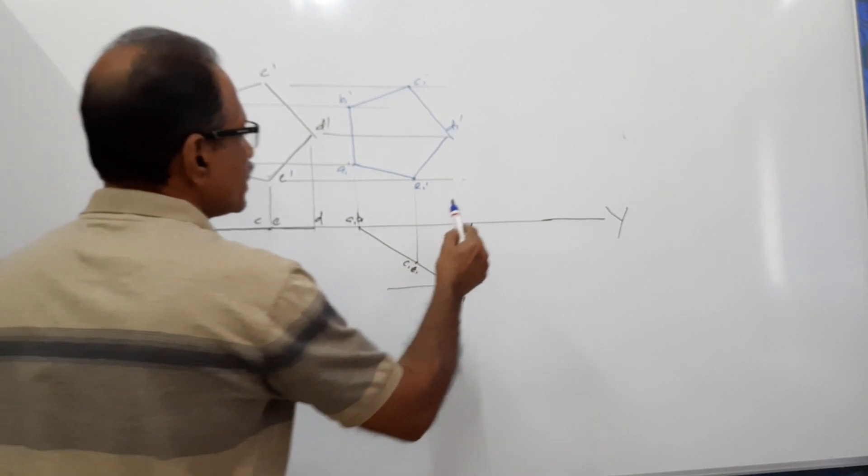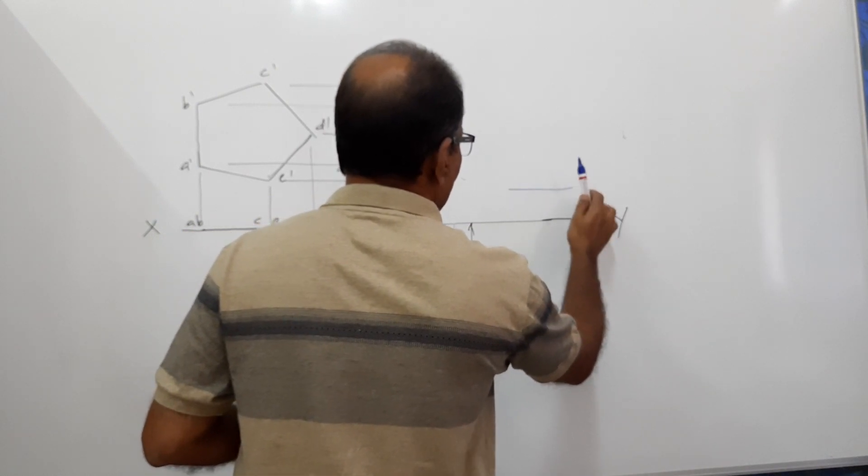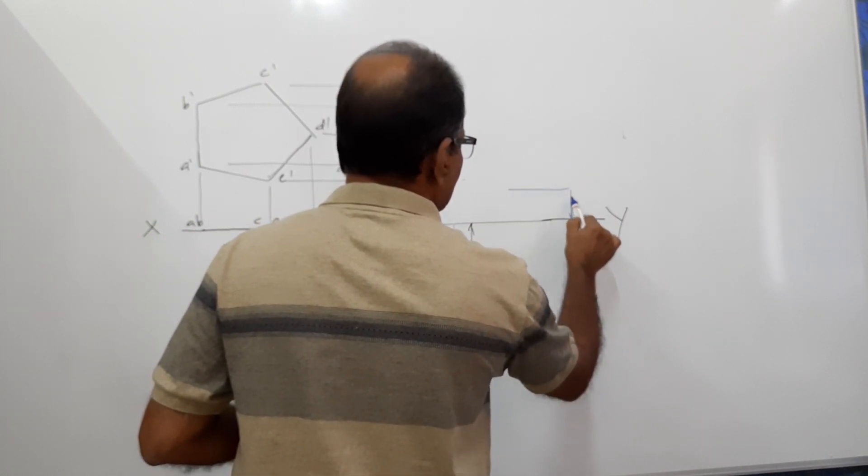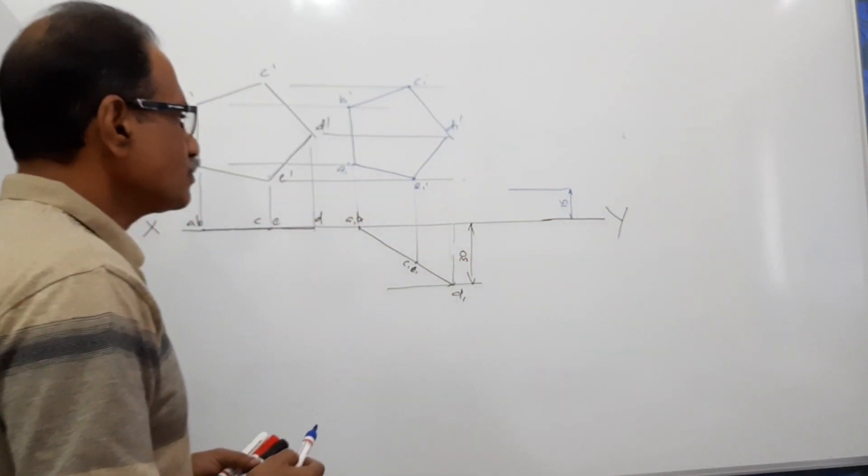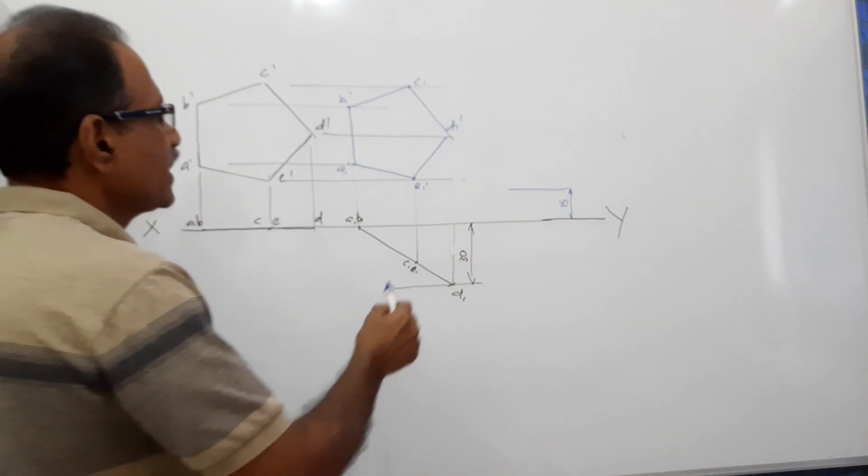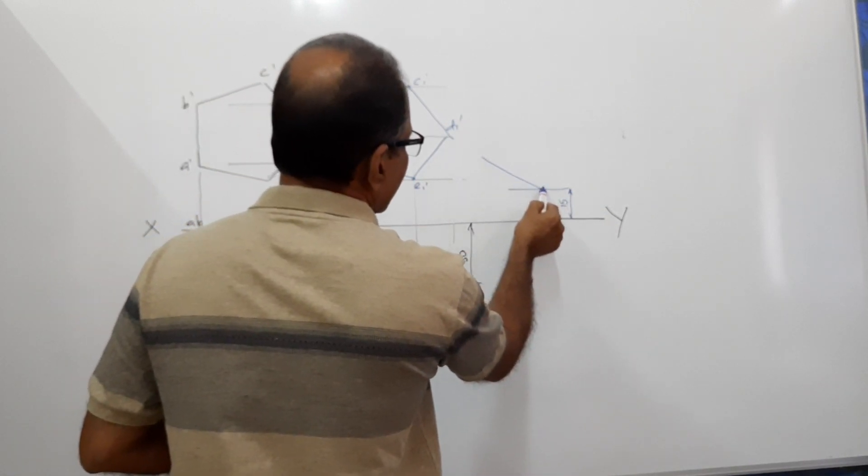Now, 15mm above XY line, draw a horizontal line. On that line, choose any point and draw a 30 degree line.